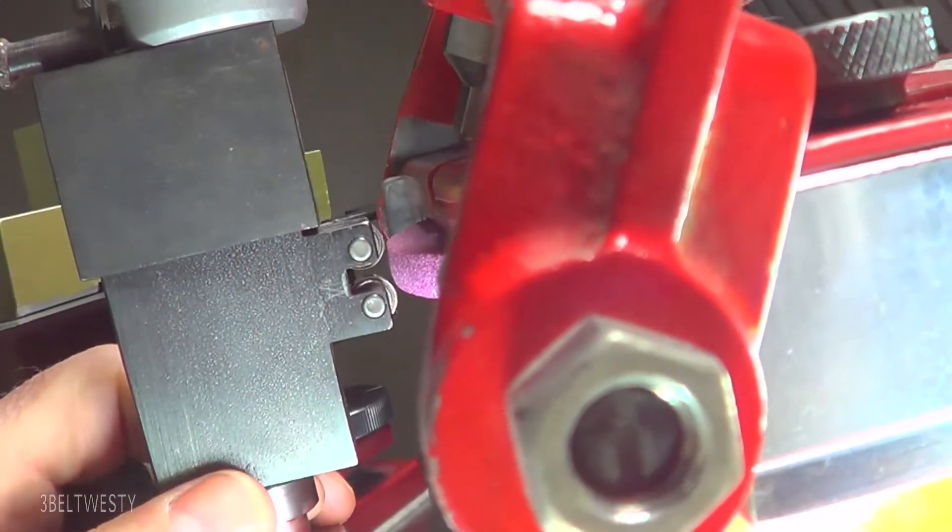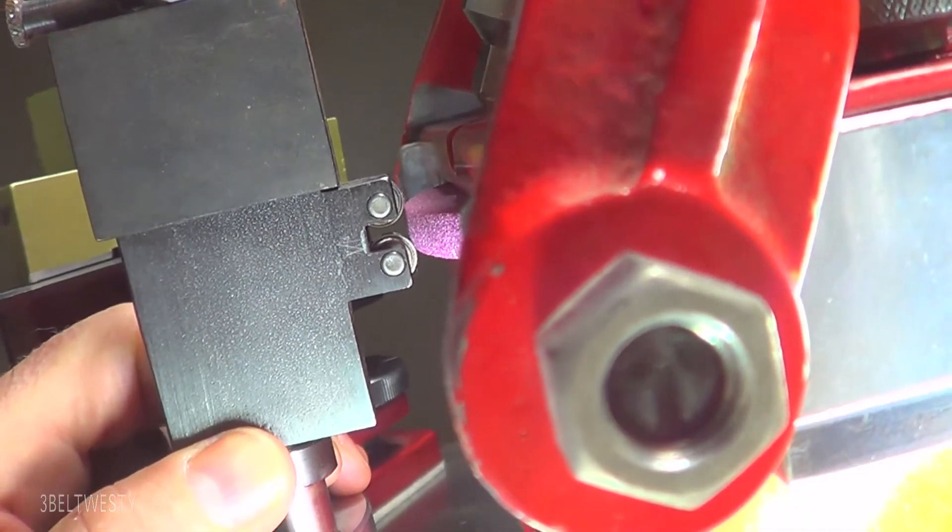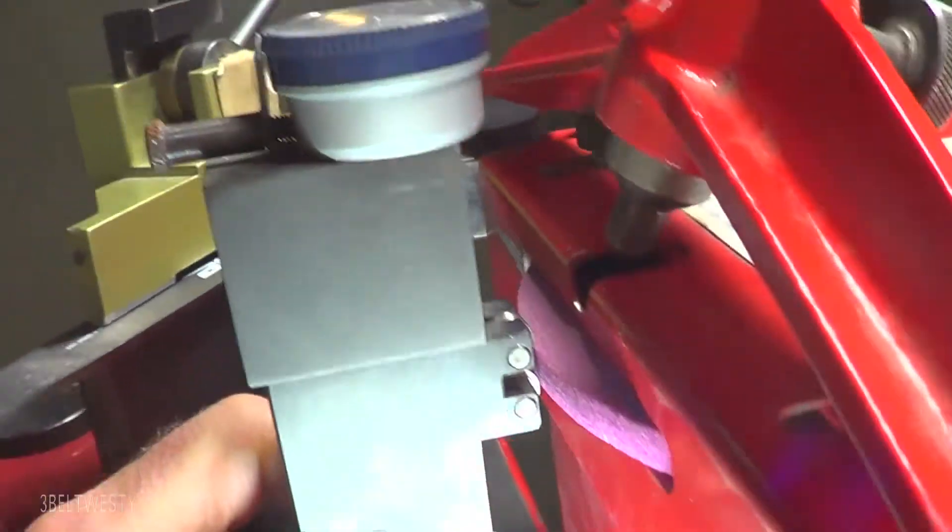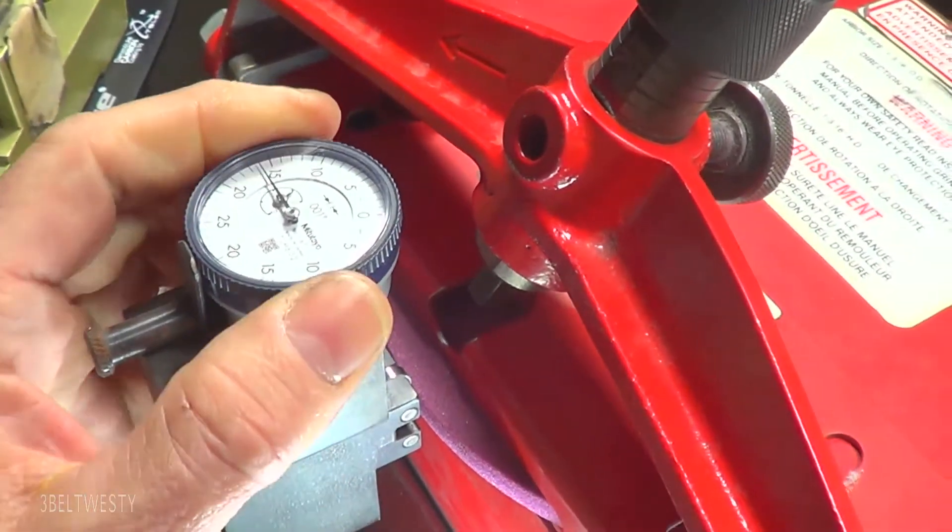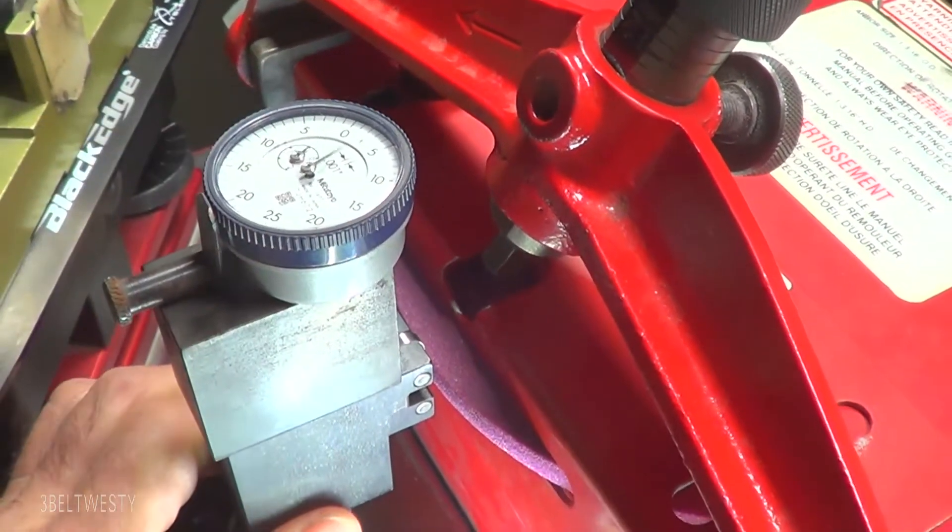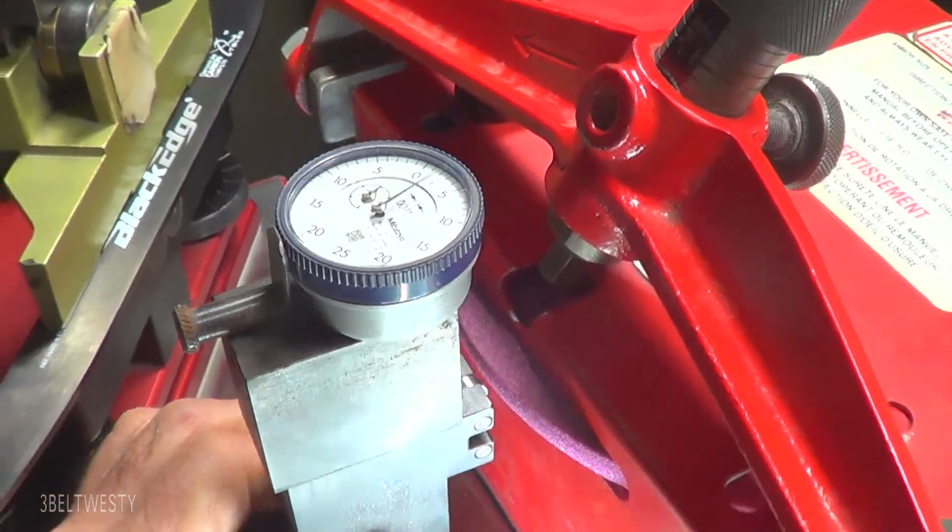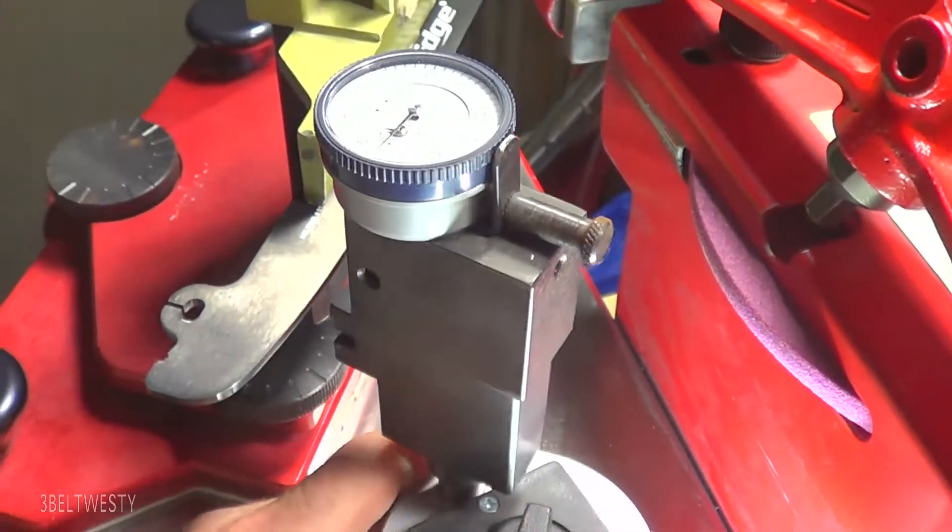This gizmo goes into here. You move it up and down to locate on the wheel, then you go ahead and set the dial to zero like this once it's in place.